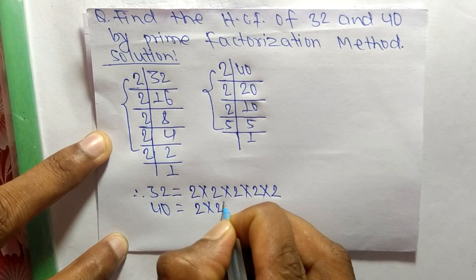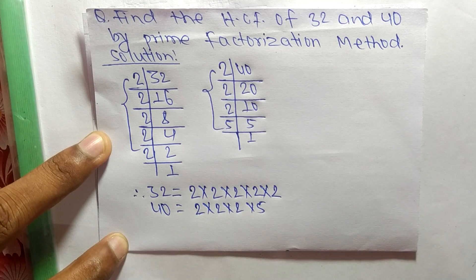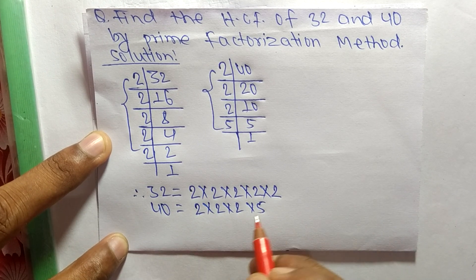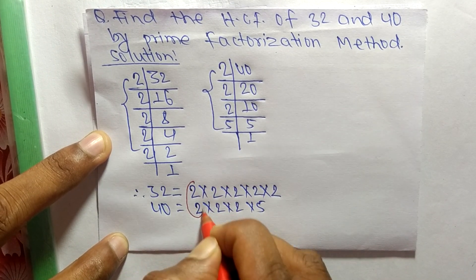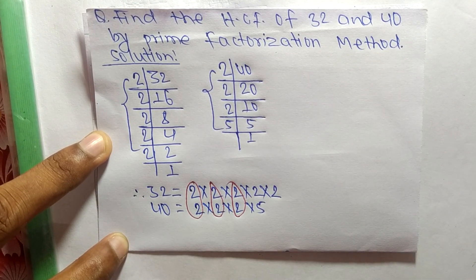Now we find the common factors in these prime factors. The common factors here are 2, 2, 2.